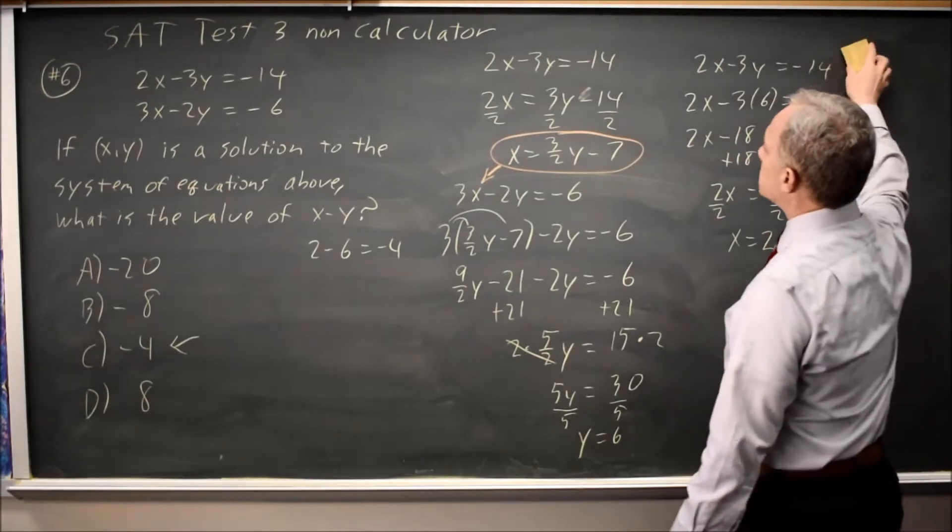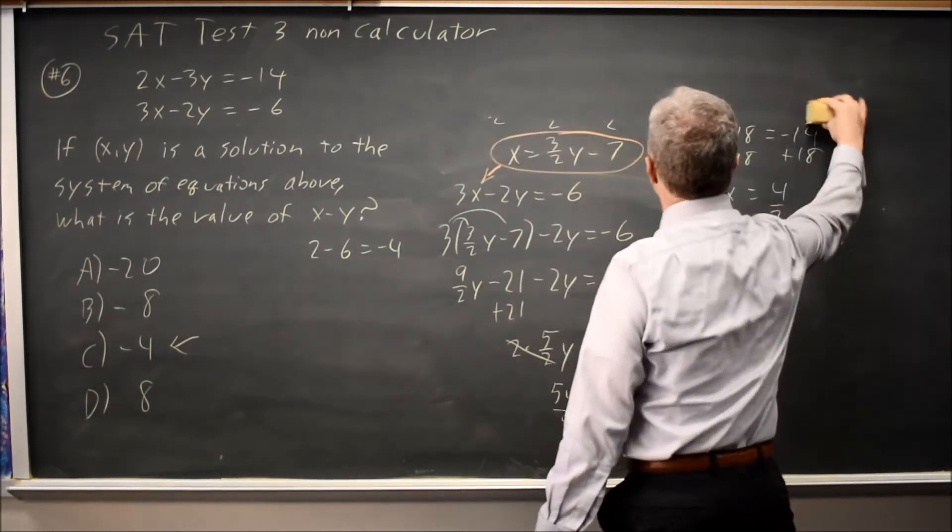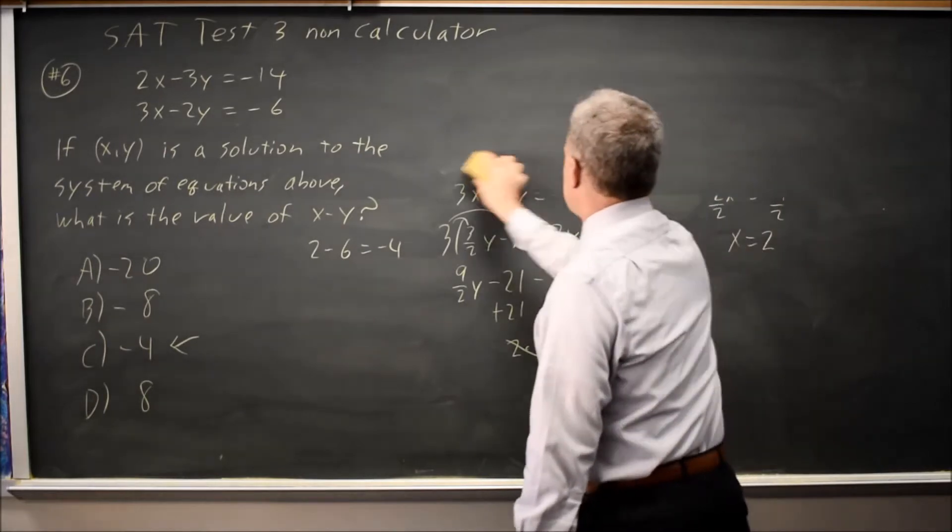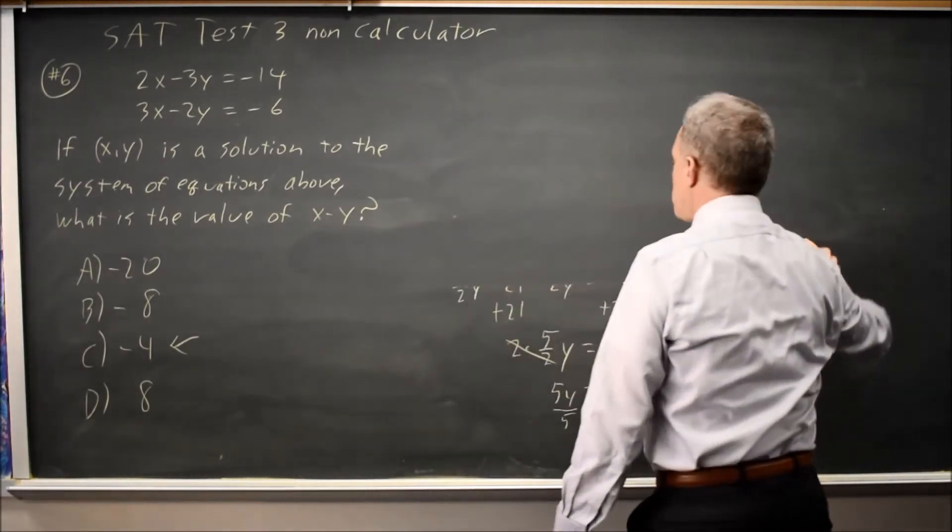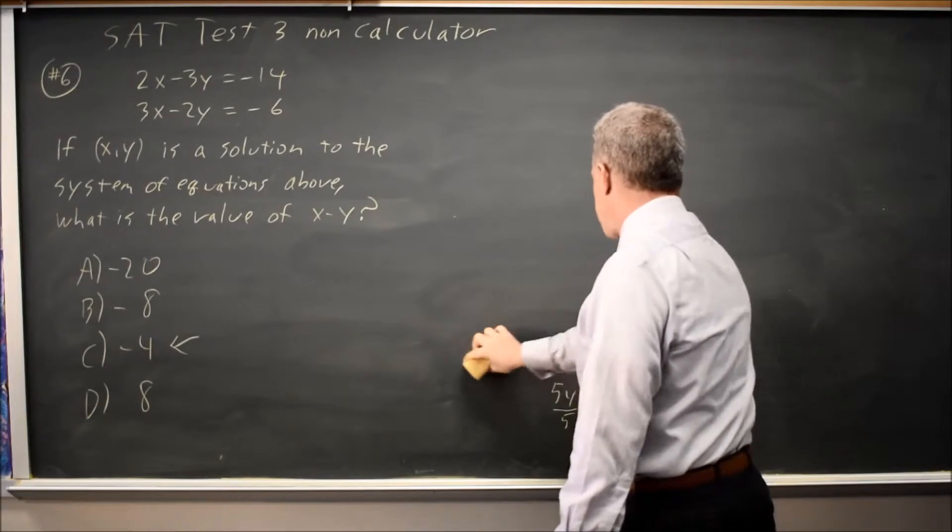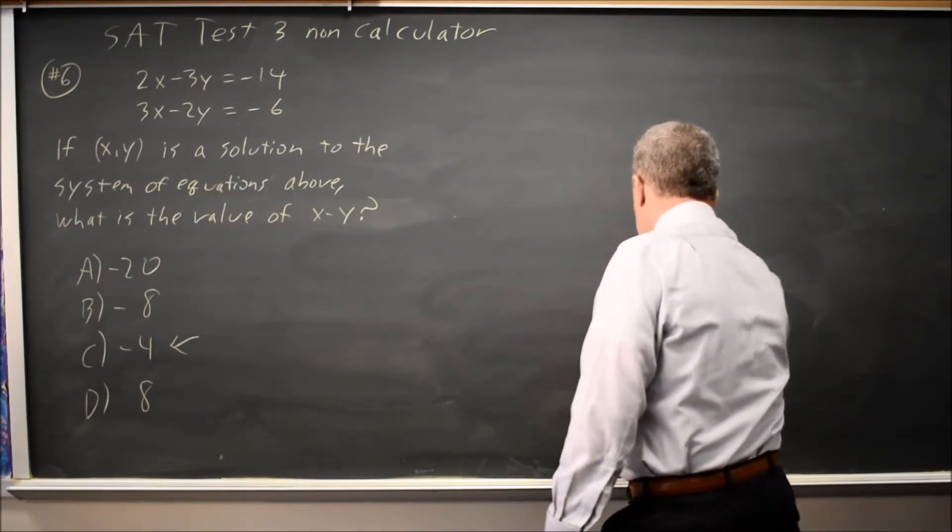Alternatively, I could use a linear combination. Take a multiple of one equation and add it to the other equation to eliminate the variable.